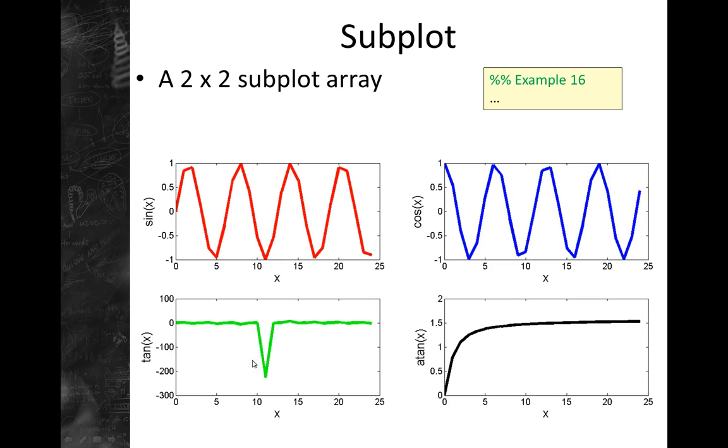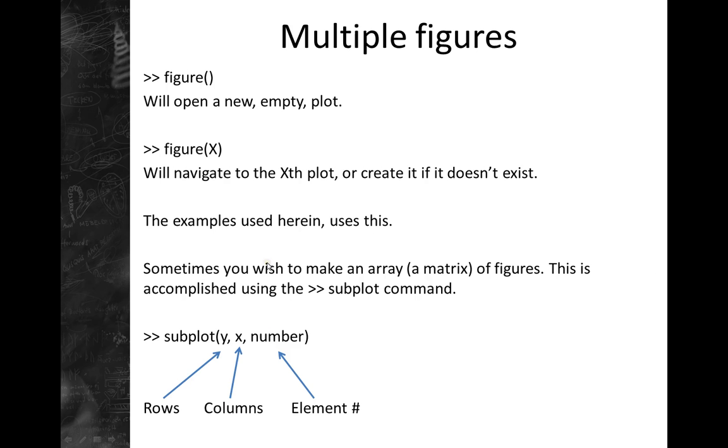For example, here I have a 2x2 subplot array. This means I've used a 2 here for 2 rows. I've used a 2 for the columns, 2 columns. And these two will never change. They will always be the same for this figure. And then the number here is between 1 and 4. There's a total number of elements in the matrix.